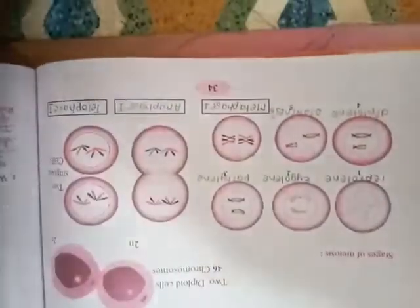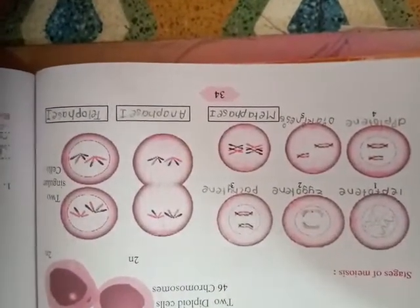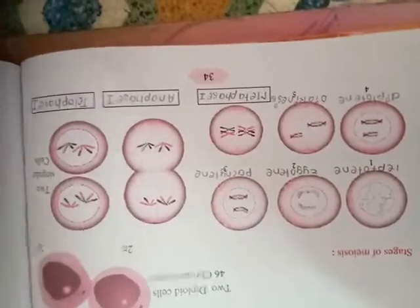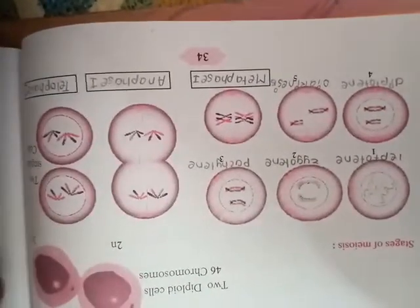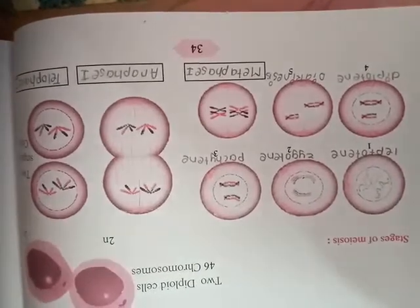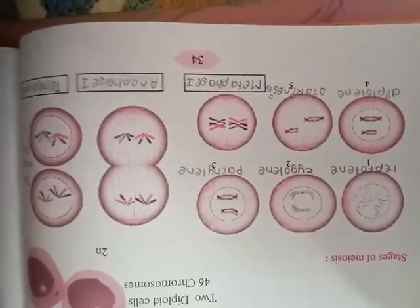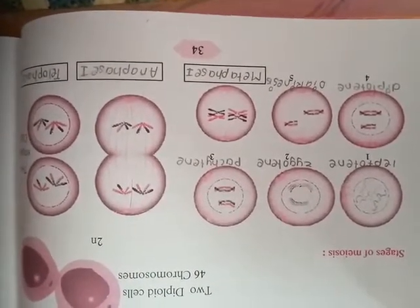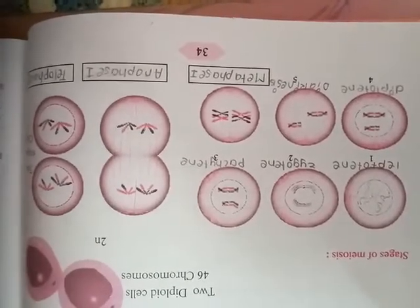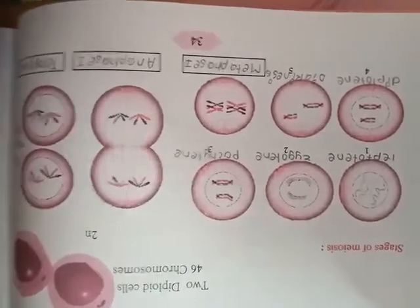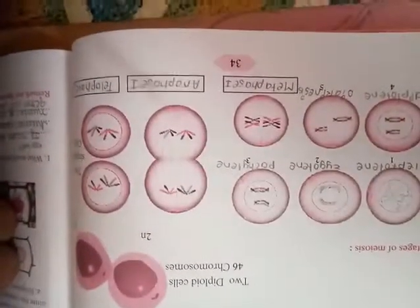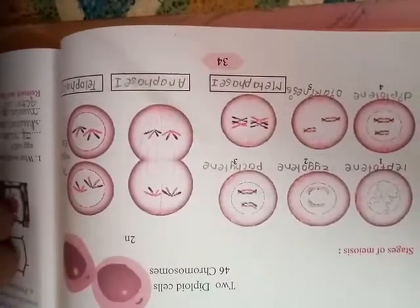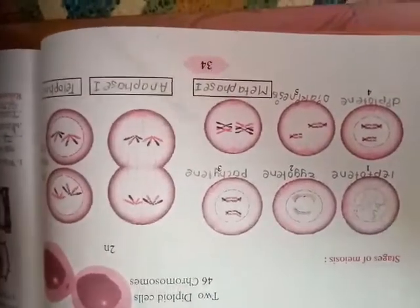Good morning everybody, today we are going to discuss the second type of cell division, that is meiosis cell division. As we have discussed initially, meiosis takes place only in germ cells. Germ cells are present in the reproductive organs of the body. In females they are present in the ovary and in males they are present in the testes.